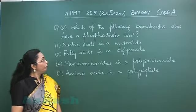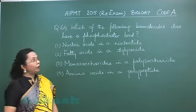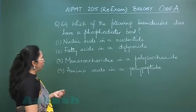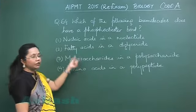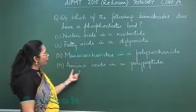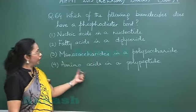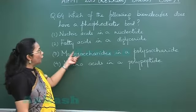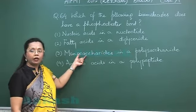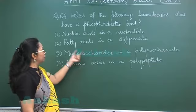Question 64: which of the following biomolecules has a phosphodiester bond? Looking at the options, amino acids in a polypeptide are linked by peptide linkages, and monosaccharides in a polysaccharide are linked by glycosidic linkages.